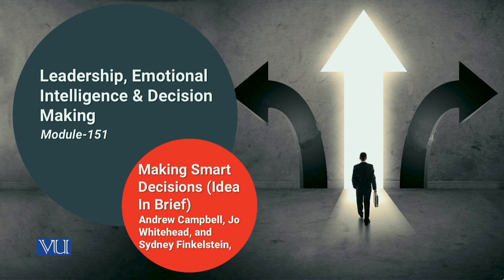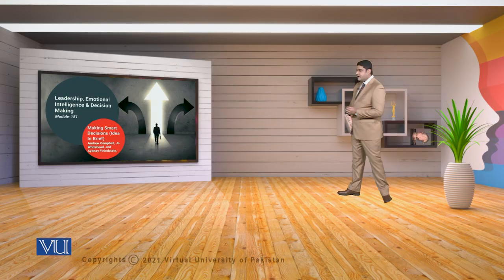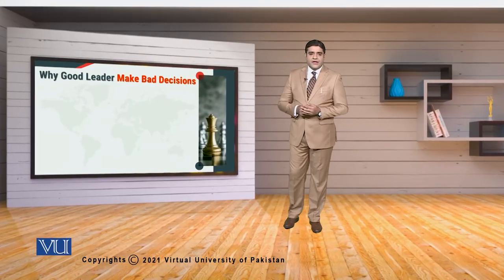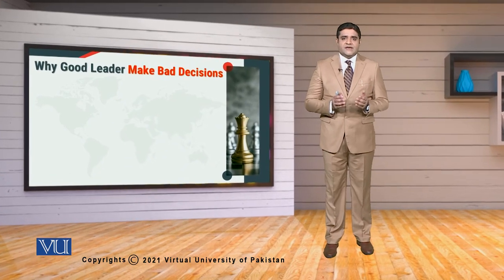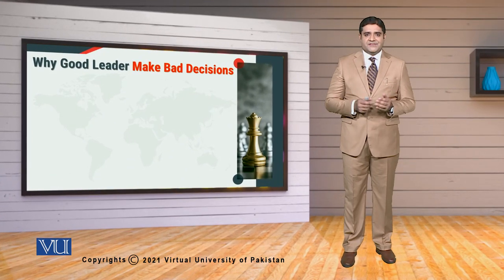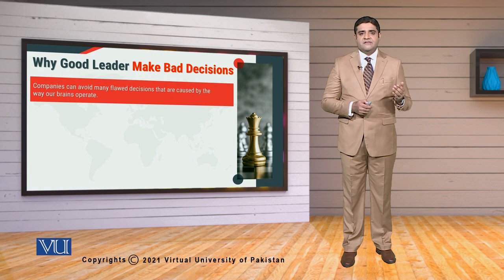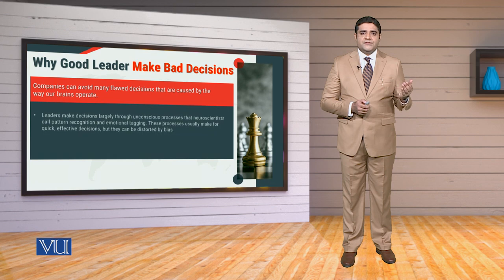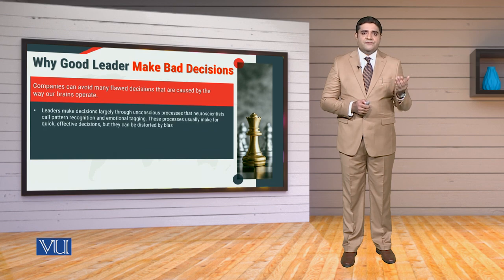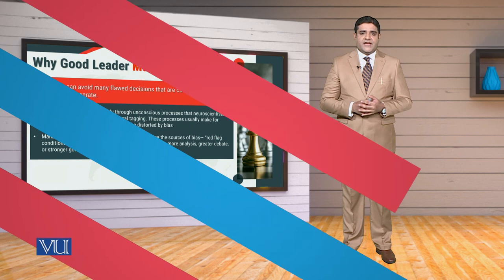When we talk about smart decisions, we mean that we have already defined smart objectives and to meet those objectives, we have to take certain decisions that are going to give us the desired outcome. In that regard, when we talk about emotional intelligence, we have to be careful that sometimes leaders can make bad decisions, and there can be certain reasons why those decisions are not up to the mark. To investigate those decisions in further detail, let's start covering the slide.